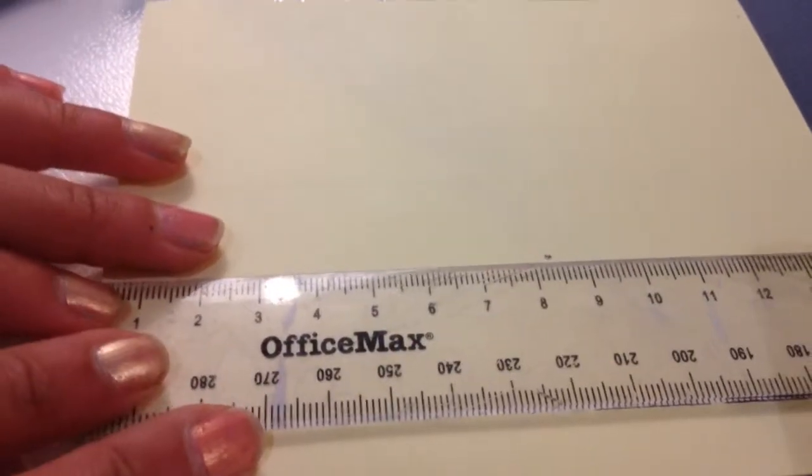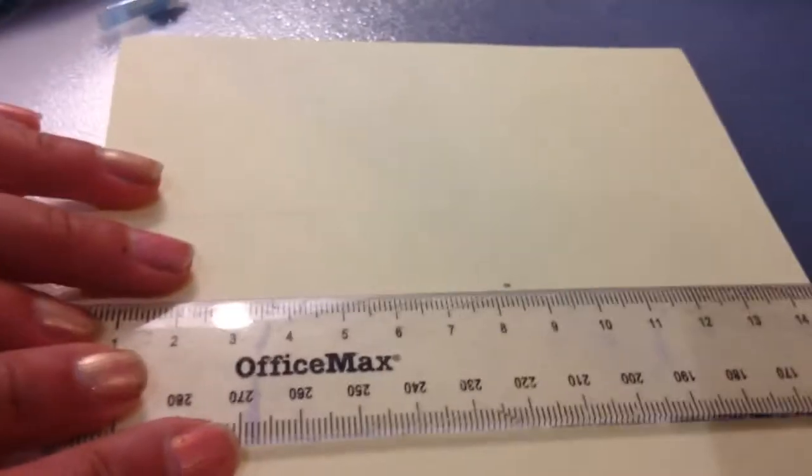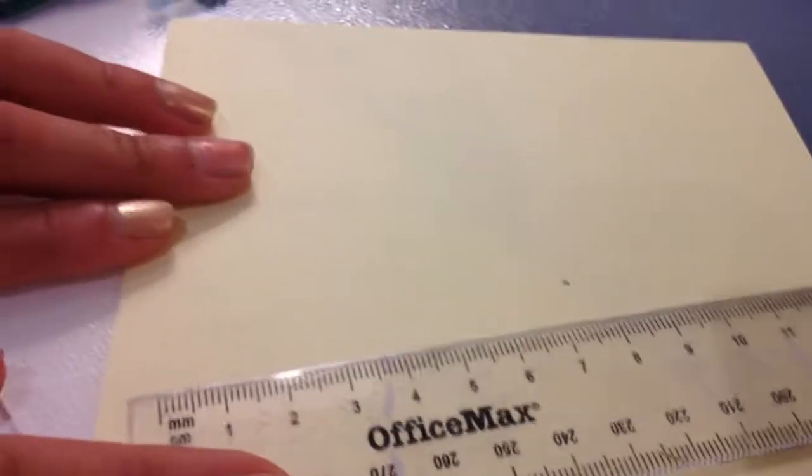Measure and cut out the size you would like for your beach towel. We are using 8 by 4 and a half.